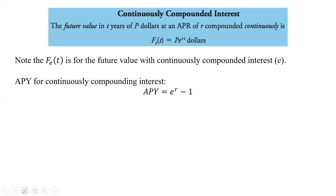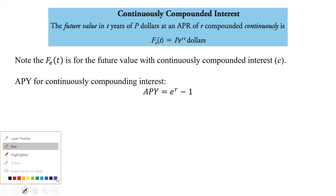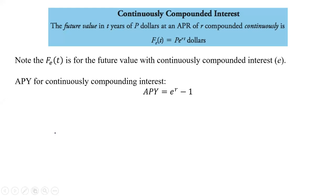Now we're going to look at continuously compounded interest. This is the best because you get the most back when you are compounding continuously. The future value in t years of P dollars at an APR of R compounded continuously is f(t) = P·e^(rt).